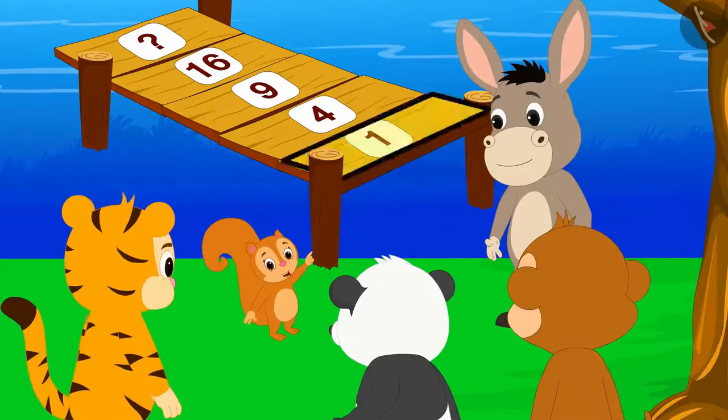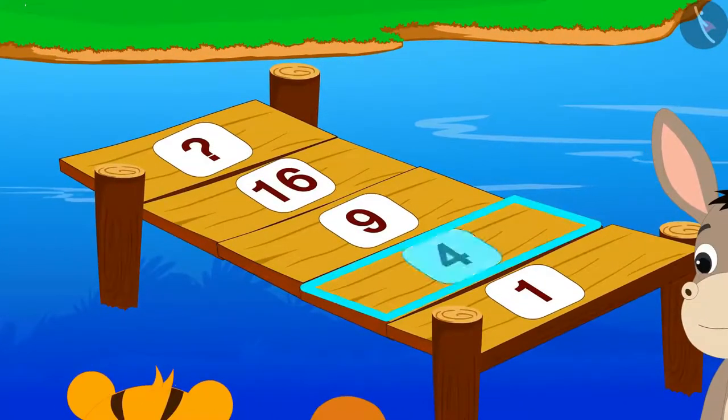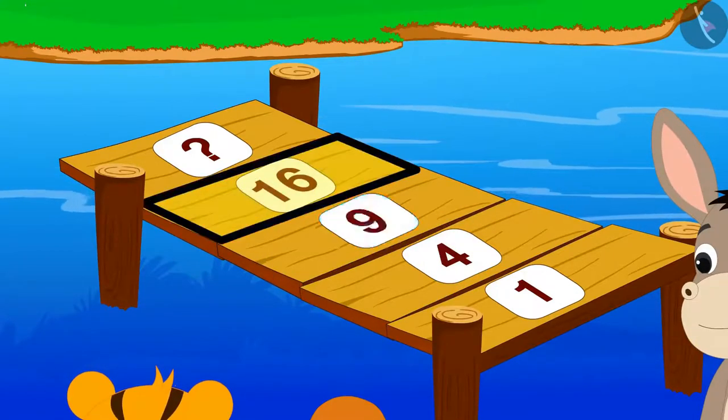1 is written on the first plank of this bridge, 4 is written on the second plank, 9 on the third plank, and 16 on the fourth plank.